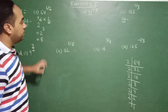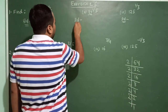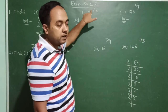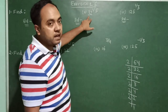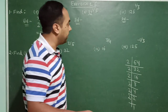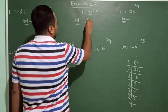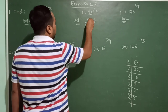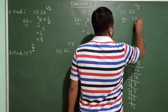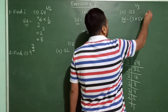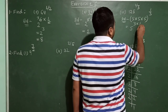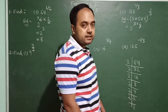The second one is 32 raised to the power 1 upon 5. To find this value, we need to eliminate this 5, so we write the prime factors of 32. The prime factors of 32 are 2 raised to the power 5. So 32 can be written as 2^5, and the 5s cancel, giving 2 power 1, which is 2. Similarly, 125 raised to the power 1 upon 3 equals 5 power 3, and outside the power is 1 upon 3 — the 3s cancel, giving 5 power 1, which is 5.